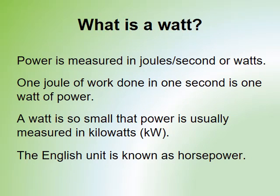A watt is the unit we use for power, also known as joules per second. One joule of work done in one second equals one watt of power. A watt is so small that we usually refer to kilowatts — what we consider a watt, like in a light bulb, is really a kilowatt. The English unit for power is horsepower, used for cars, leaf blowers, lawn mowers, and snow blowers. For things like light bulbs and microwaves, we use the metric unit, which is the watt.